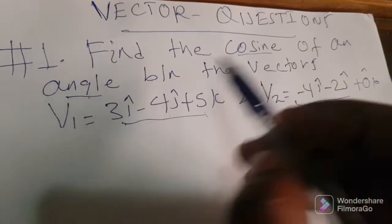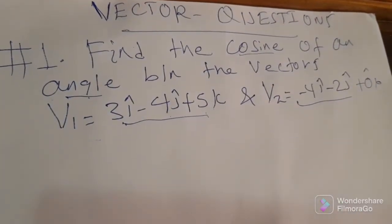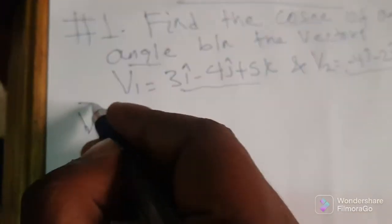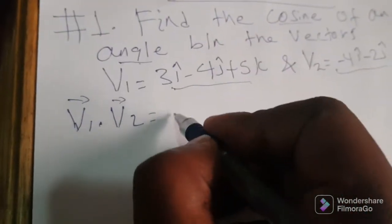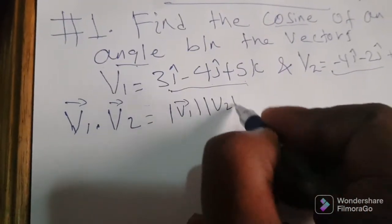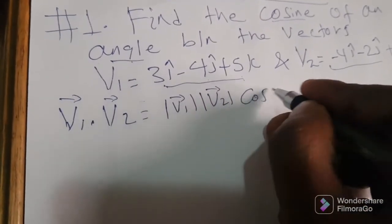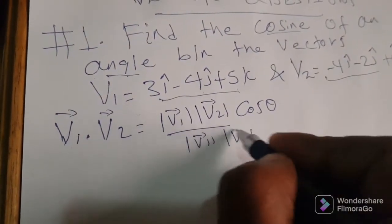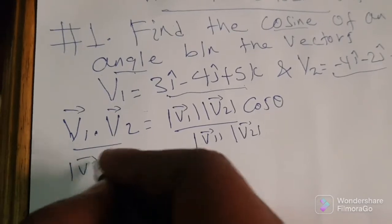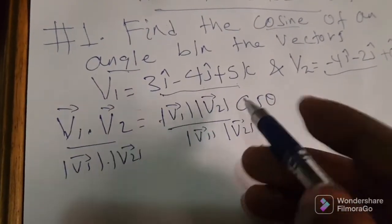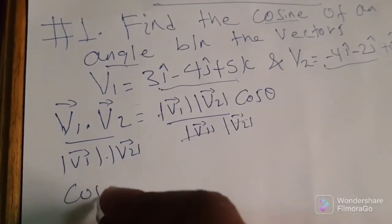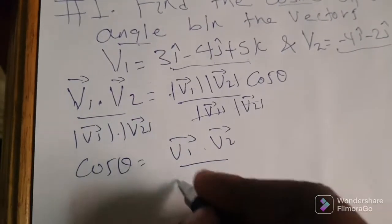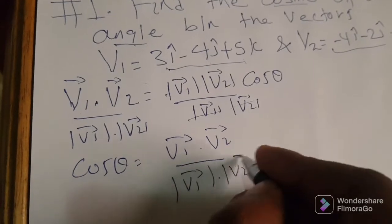So the formula for the angle between vectors uses the dot product. V1 dot V2 equals the magnitude of V1 times the magnitude of V2 times cos theta. So cos theta is equal to V1 dot V2 over the magnitude of V1 times the magnitude of V2.